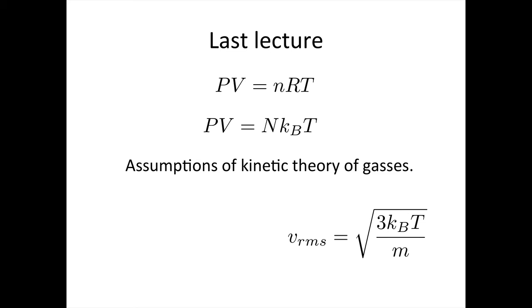Last lecture you saw the ideal gas law, PV equals nRT. This relates the pressure, volume, and temperature to the number of moles, where R is the gas constant, 8.314. PV equals nRT is a good form to use when you've got a lot of molecules.